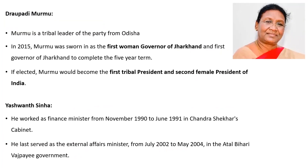The NDA candidate, if selected, comes from a tribal family. She was elected as the first woman from that community in 2015 for a 5-year term. In India, 48% of electoral vote majority is needed to elect the president. In this case, she would become the first tribal president and the second female president of India.